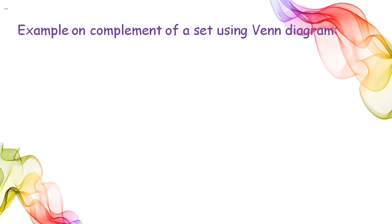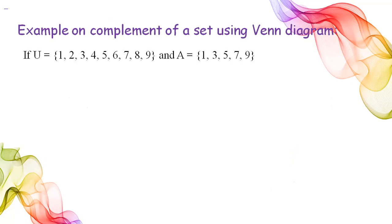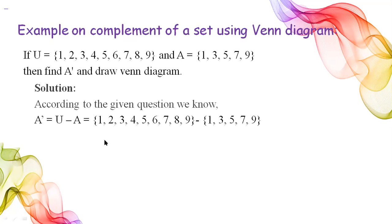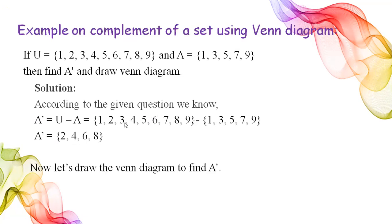Let's take an example to find the complement of a set. The universal set U = {1, 2, 3, 4, 5, 6, 7, 8, 9} and set A = {1, 3, 5, 7, 9}. We need to find the complement of A and draw the Venn diagram. A complement equals U difference A. Since 1, 3, 5, 7, and 9 are present in set A, the answer is {2, 4, 6, 8}.